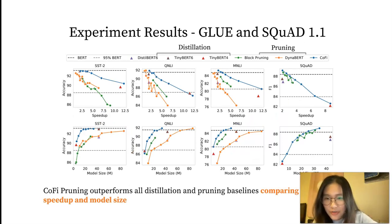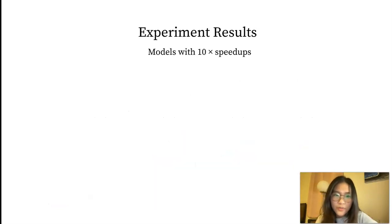CoFi pruning instead, showing the blue curves, outperforms all distillation and pruning baselines, comparing under the same speed-up and model size. Next, we turn to models that could achieve over 10 times speed-ups.